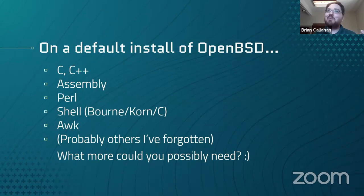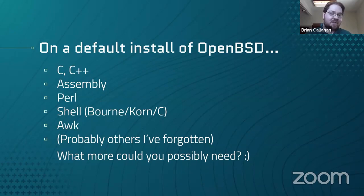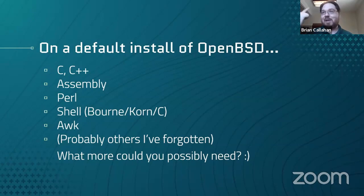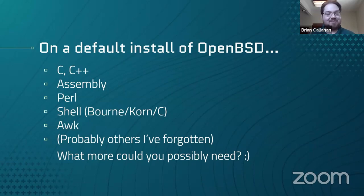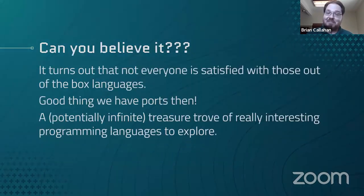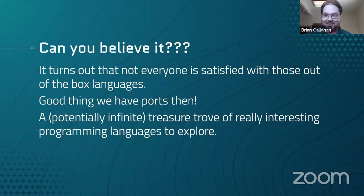Out of the box on a default install of OpenBSD — no packages whatsoever — you can compile C, C++, you have an assembler, you have Perl, you have multiple dialects of shell: Bourne shell, Korn, and csh. You have awk. On one hand we can say mission accomplished — there is nothing else you could possibly need. You can code literally anything you want with just these languages. But not everyone is satisfied with just those out-of-the-box languages, and they want more. They have different needs that require them to use something else.